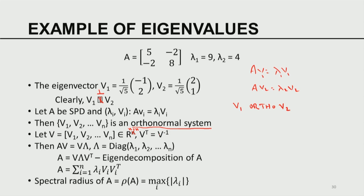This matrix V is orthogonal, so its transpose equals its inverse. From the basic definition Av_i = lambda_i v_i, we can write AV = VΛ, simultaneously summarizing all n equations. Here A is the given matrix, V is the matrix of n eigenvectors, and Λ is the diagonal matrix of the n corresponding eigenvalues. Note the correspondence: lambda₁, lambda₂, ..., lambda_n pair with v₁, v₂, ..., v_n.